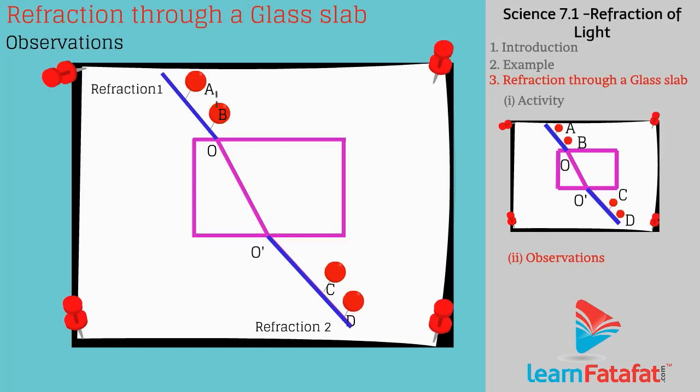If we draw the normals to point O and O dash, then it is observed that when light enters the glass slab, it bends towards the normal. And when light leaves the glass slab, it bends away from the normal.